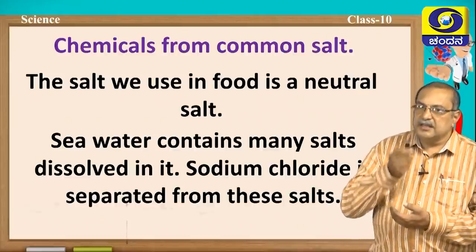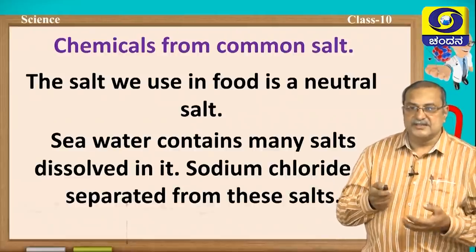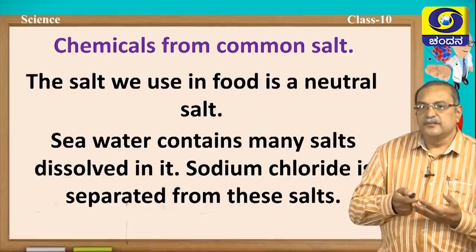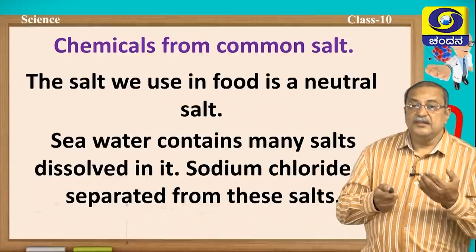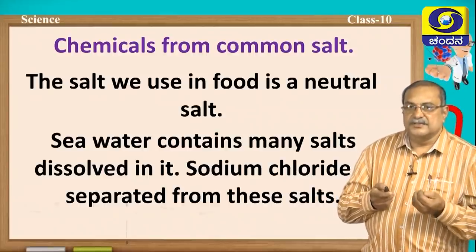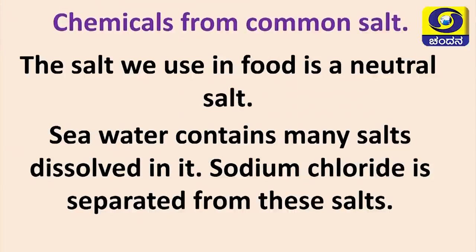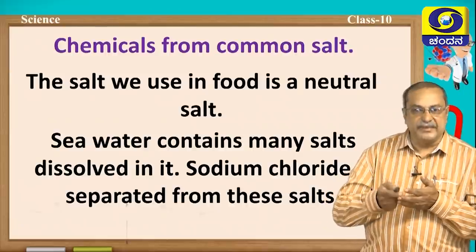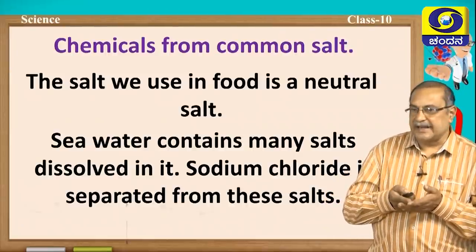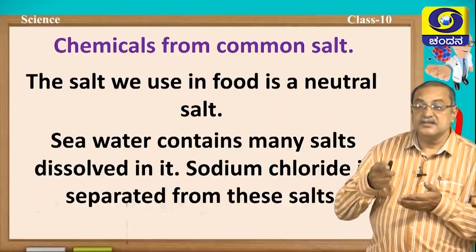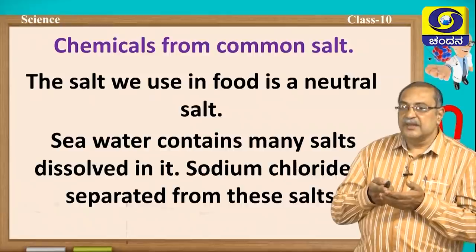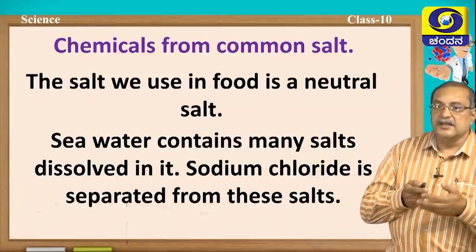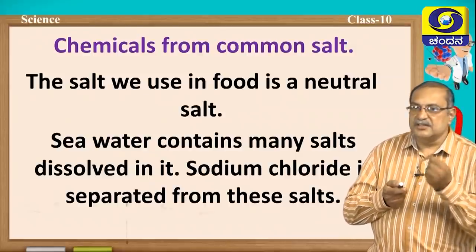Now we are going to learn about chemicals from common salt. Common salt is sodium chloride, used for cooking. Salt is the product obtained by the combination of acid and base. The reaction: NaOH + HCl → NaCl + H₂O. This is a neutral salt — the salt we use in food is neutral, with pH 7.